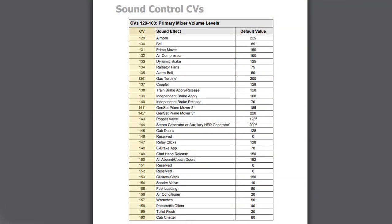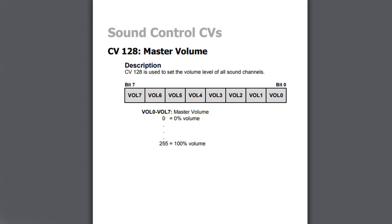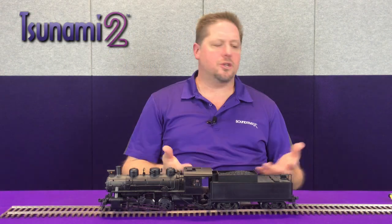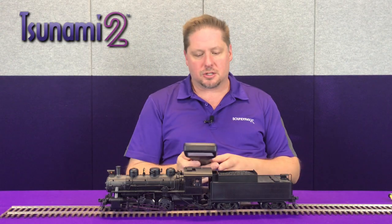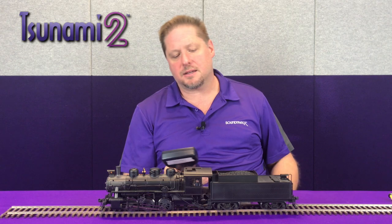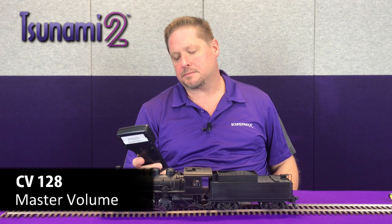Those individual volume settings are set in CVs 129 through 160. CV128 is your master volume, and the way this works is 0 to 255 equals 0 to 100% of the volume. So let's say we're going to turn the volume down — I'm going to take CV128 and set it to a value of 50.